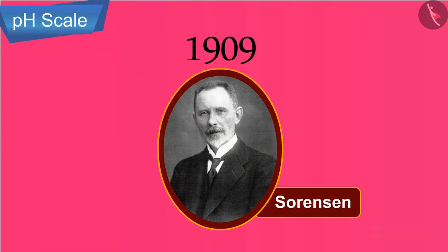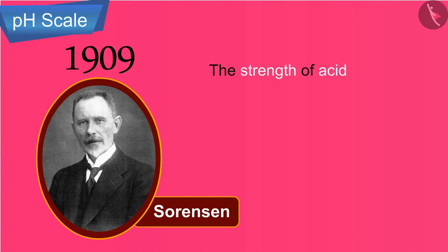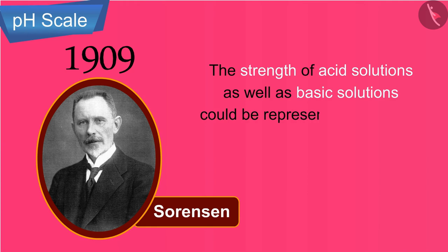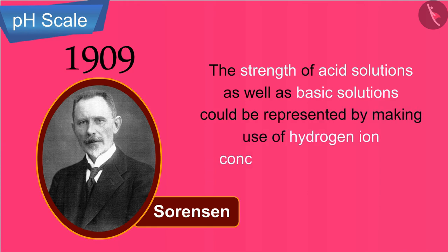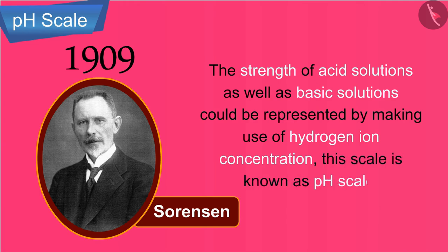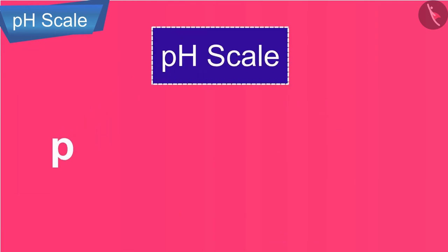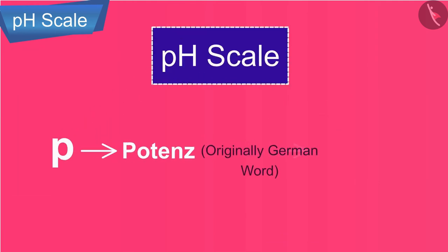In 1909, Sorenson devised a scale on which the strength of acidic as well as basic solutions could be represented by making use of hydrogen ion concentration. This scale is known as the pH scale — 'pH' stands for 'potence,' originally a German word meaning 'power,' or in simple words, the power of hydrogen ions.